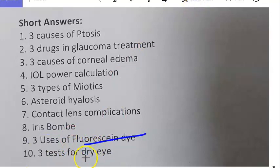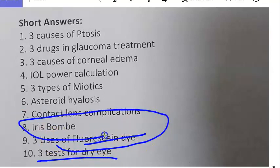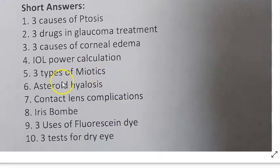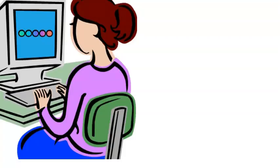Fluorescein dye uses: three uses — checking the tear film, assessing aqueous drainage, and fundus fluorescein angiography. For dry eye tests: Schirmer's test, tear osmolarity, and tear break-up time.